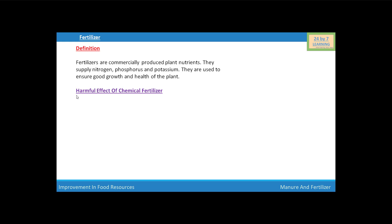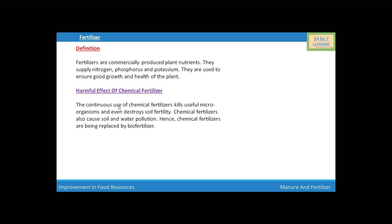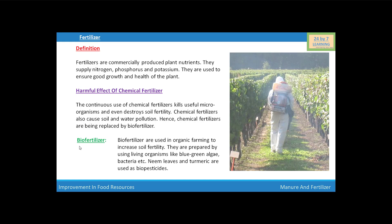Now we are going to discuss the harmful effects of chemical fertilizers. The continuous use of chemical fertilizers kills useful microorganisms and even destroys soil fertility. Chemical fertilizers also cause soil and water pollution. Hence, chemical fertilizers are being replaced by bio-fertilizers. Bio-fertilizers are used in organic farming to increase soil fertility. They are prepared by using living organisms like blue-green algae and bacteria. Neem leaves and turmeric are also used as bio-pesticides.